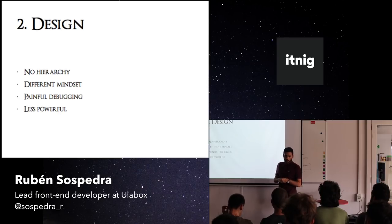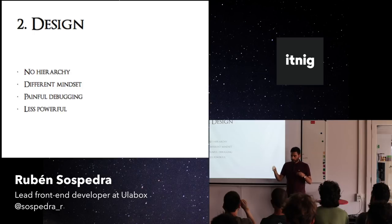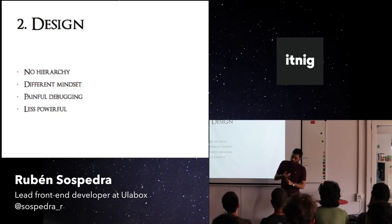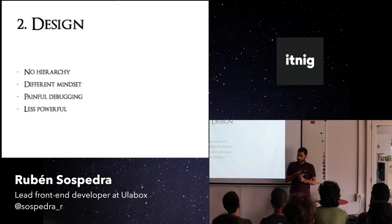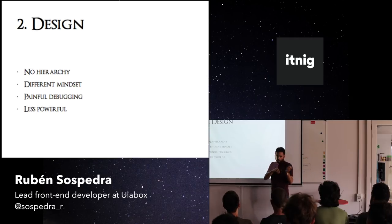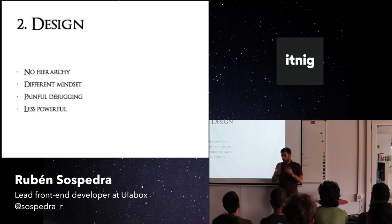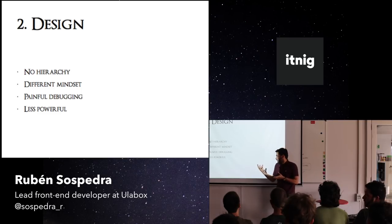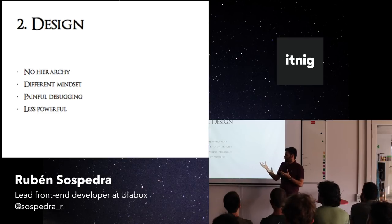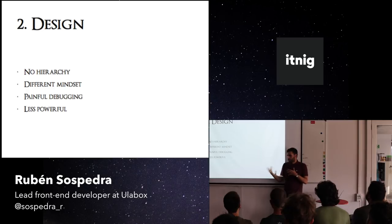Behind the curtains, React Native is using a library called Facebook Yoga, which controls all the styling. Yoga doesn't support, right now, media queries, sibling selectors, or certain CSS features that are not part of the core. You can use some libraries to solve this, but it will be bad for performance — basically because they hook into a thing called Dimensions and Platform from React Native, which hooks into almost all device events.